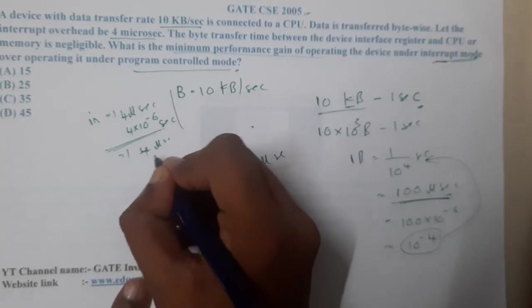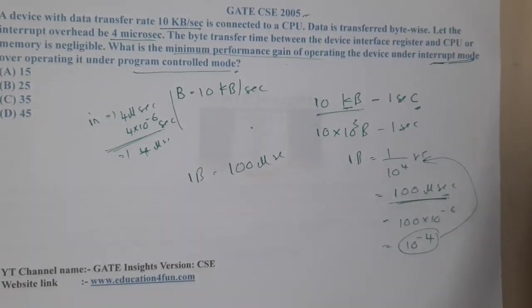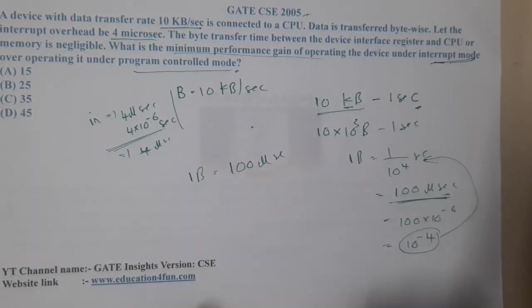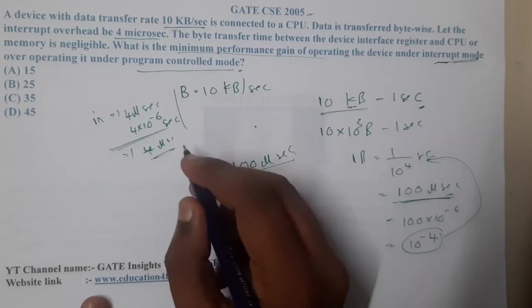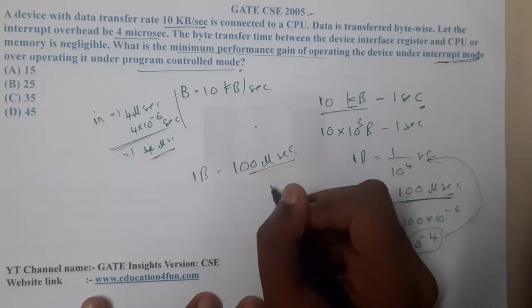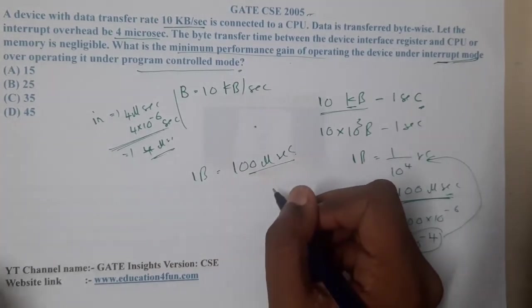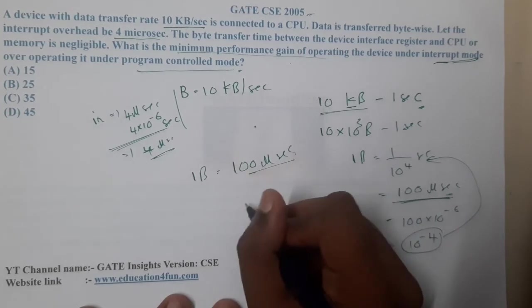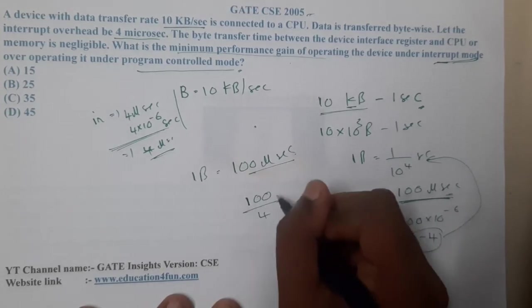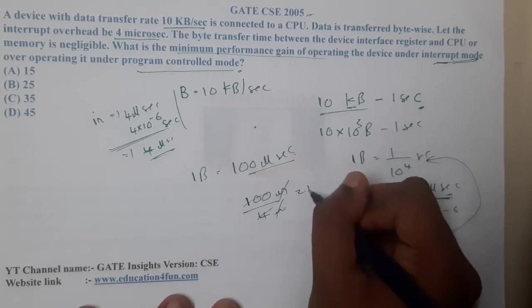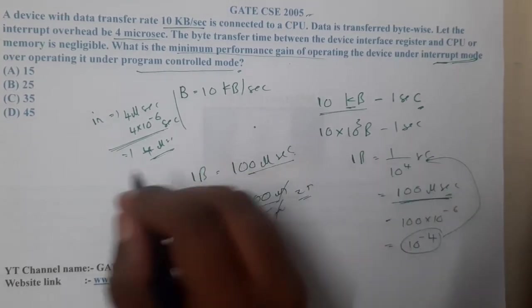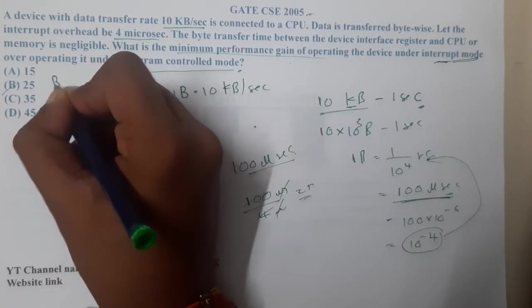So 1 byte takes 100 microseconds for transfer, and the interrupt overhead for the same 1 byte is 4 microseconds. The performance gain ratio is 100 divided by 4, and the microseconds cancel — giving us 25. So the correct answer is (b) 25.